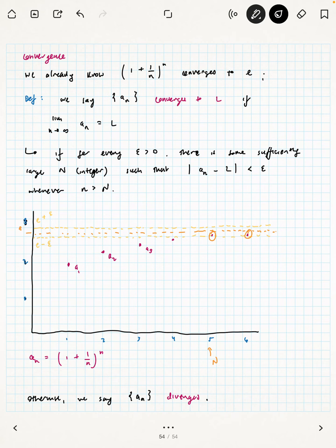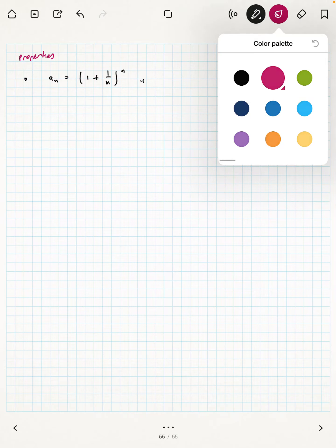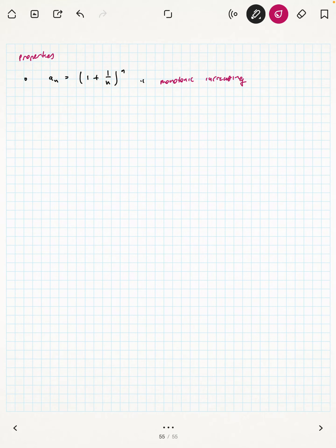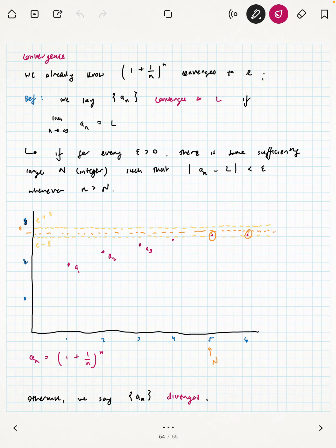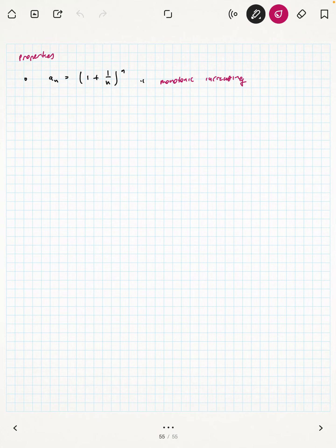We'll have more to say about that in a future video. But for now, let me just say there are some cool things happening with this sequence. One property is monotonic increasing, meaning, as you can see from the picture, the graph of the sequence, the terms are getting larger.